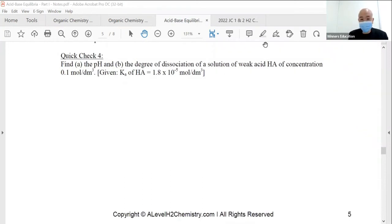We want to find the pH and the degree of dissociation. So there are two parts to the question. Let's do part A first. So the acid is HA. This is the equilibrium equation. So let's draw it out.